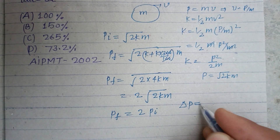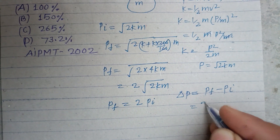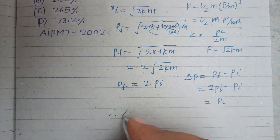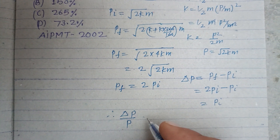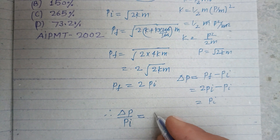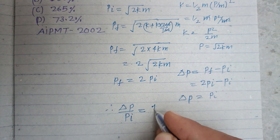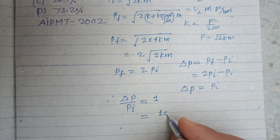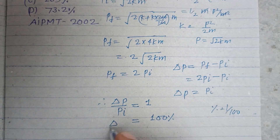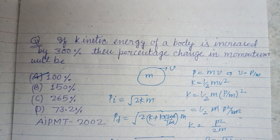Therefore, the change in momentum ΔP = P_final − P_initial = 2×P_initial − P_initial = P_initial. So ΔP / P_initial = 1, which can be written as 100%, because percent means divided by 100. So the change in momentum is 100%.